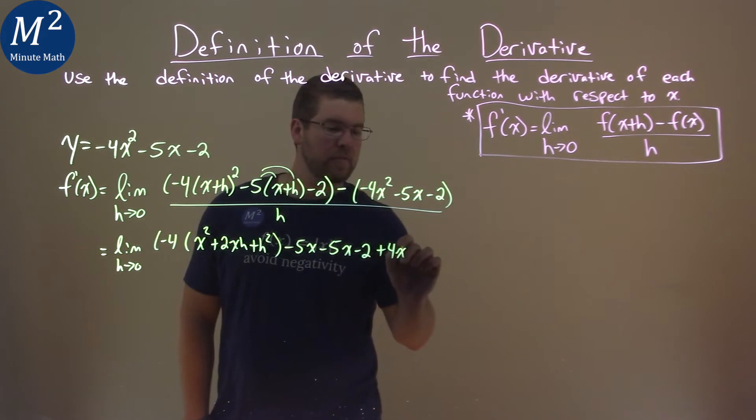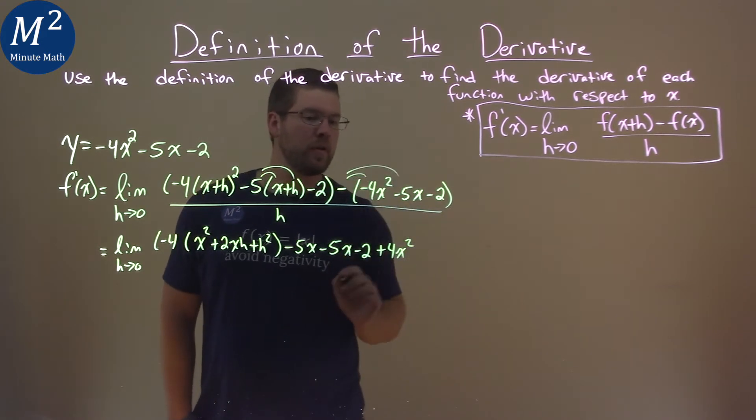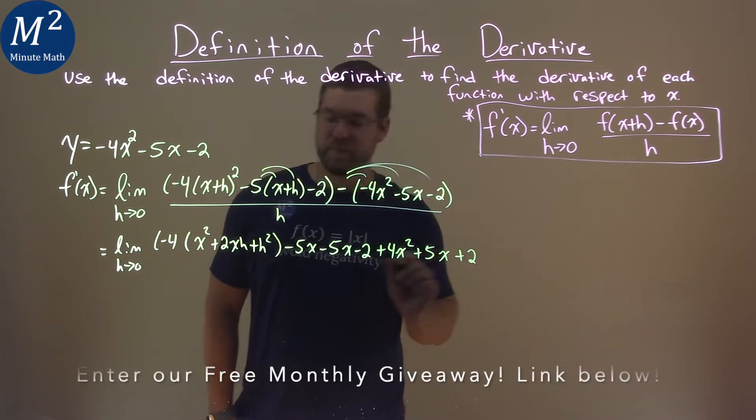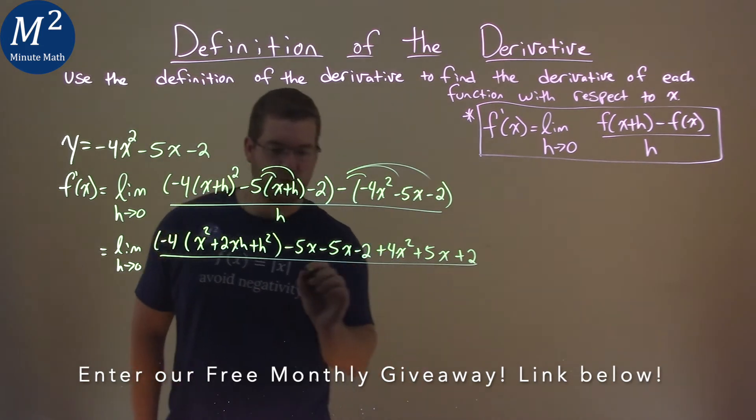So we have plus 4x squared. Distribute that over, and then plus 5x, and plus 2. All of that is over just an h.